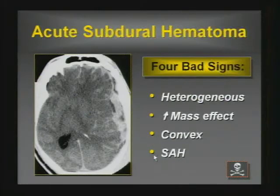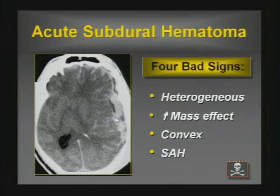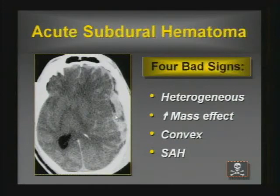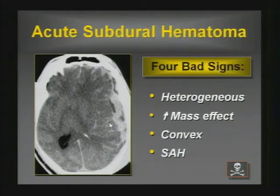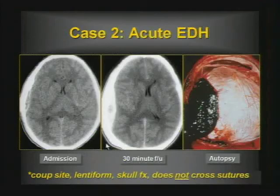There are a couple particularly ominous findings in a subdural hematoma. When it's heterogeneous, that's concerning because it may mean active bleeding, or re-bleeding into a pre-existing chronic subdural hematoma. Four findings that portend a worse prognosis: heterogeneity suggesting active hemorrhage, disproportionate mass effect, a lesion that's slightly convex, and associated subarachnoid hemorrhage.